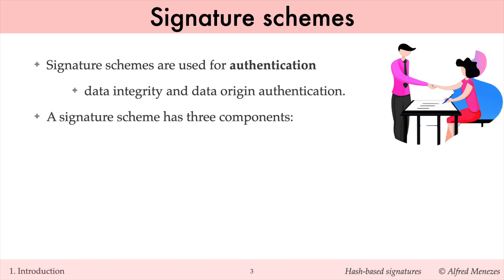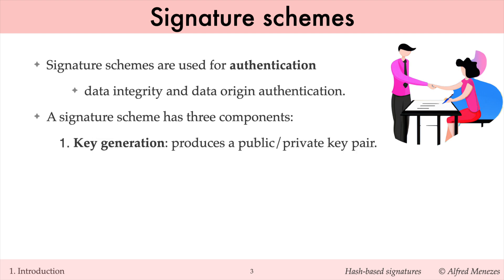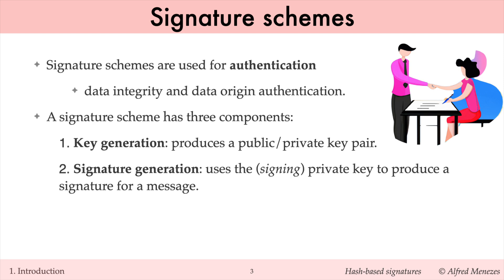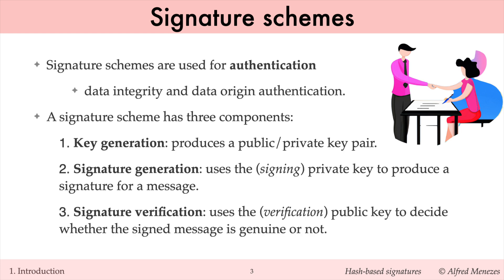A signature scheme consists of three algorithms: a key generation algorithm, which is used by Alice to generate her public-private key pair; a signature generation algorithm, which allows Alice to sign messages using her private key; and a signature verification algorithm, which enables anyone with Alice's authentic public key to verify that messages allegedly signed by Alice are genuine.